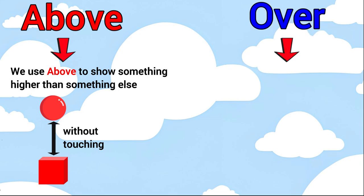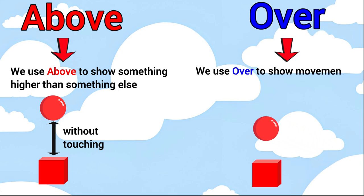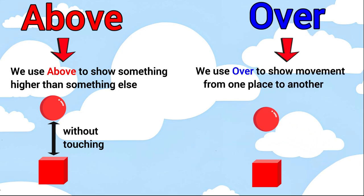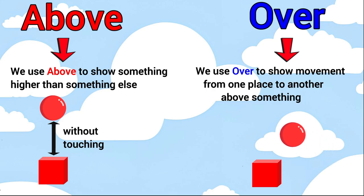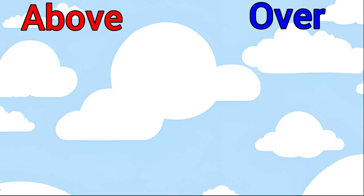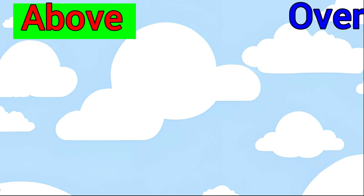We use 'over' to show movement from one place to another above something. Now let's see some examples.